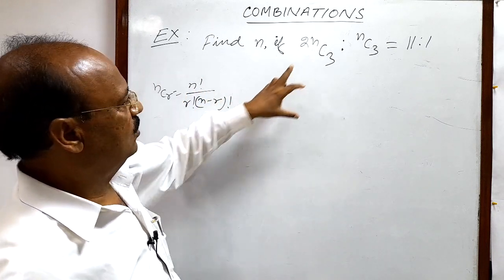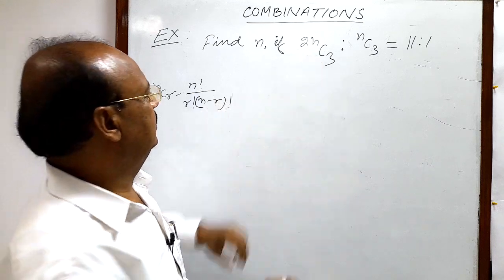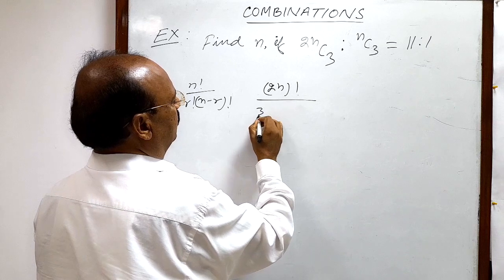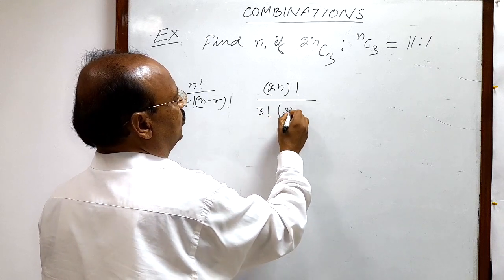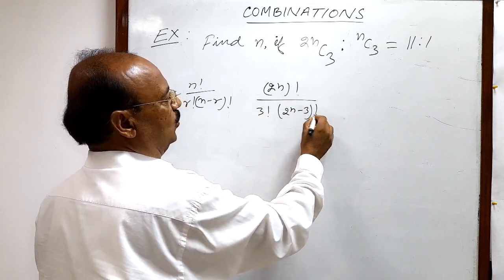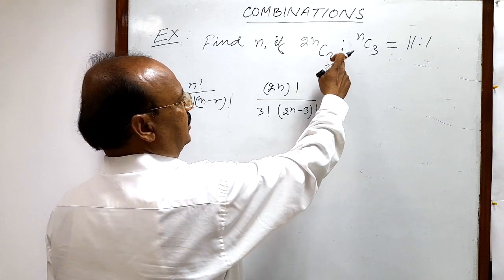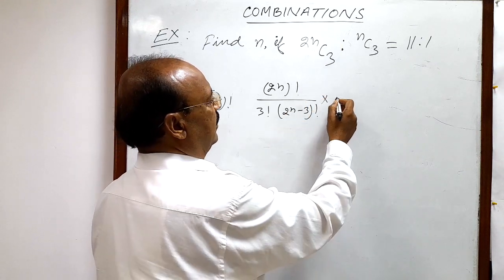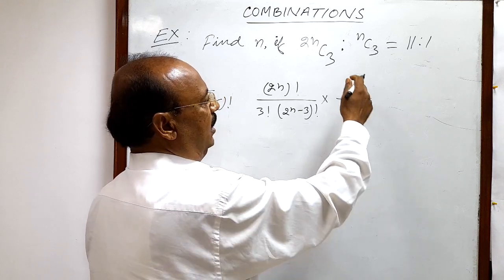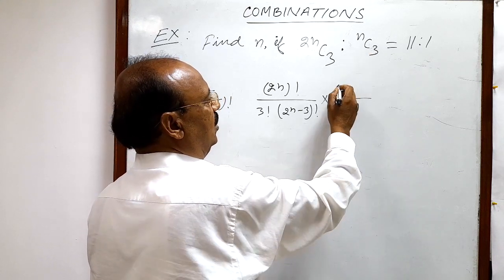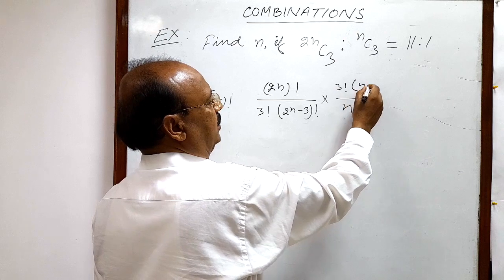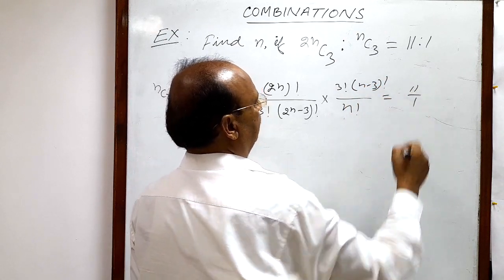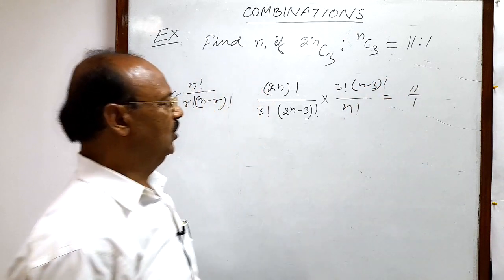On the basis of this formula we can write 2nC3 is equal to 2n whole factorial by 3 factorial into 2n minus 3 whole factorial. And since the ratio is 2, we write in multiplication: n factorial will come in the denominator and in the numerator we write 3 factorial into n minus 3 whole factorial. This is equal to 11 by 1.